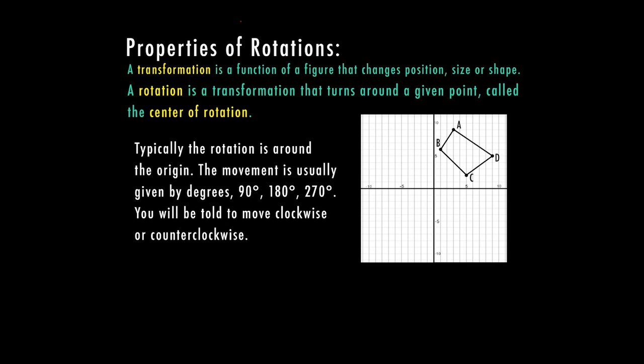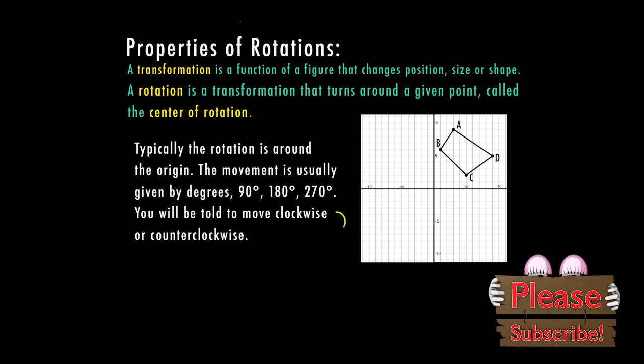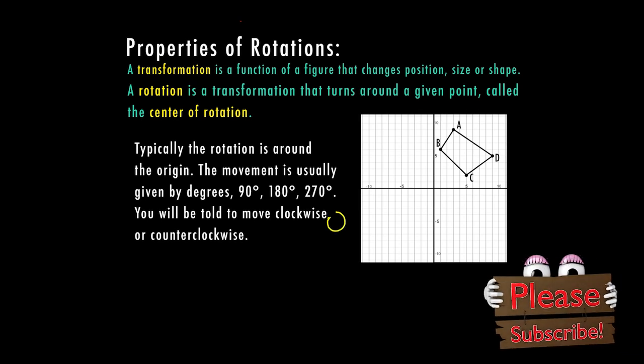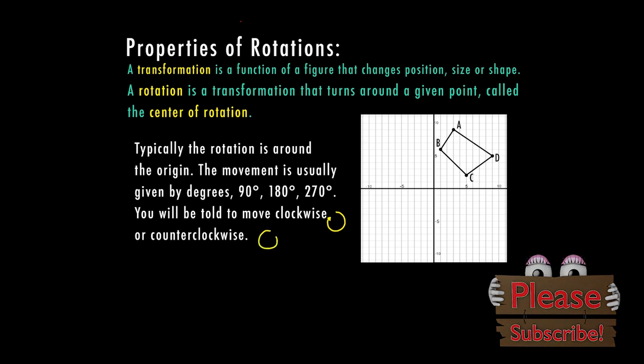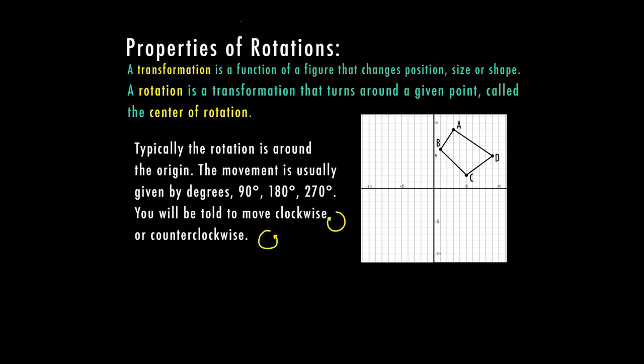So let's talk really quickly about clockwise and counterclockwise. Clockwise means the direction that the hands move on a clock. So that's going to be going this direction. Counterclockwise is the opposite. We're going to counter that. So if I'm here in quadrant one, this is quadrant two, three, four, just a little review for you.